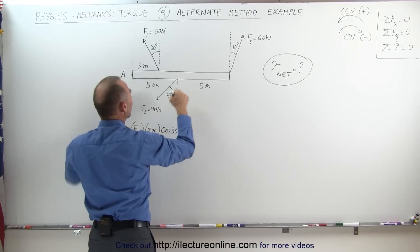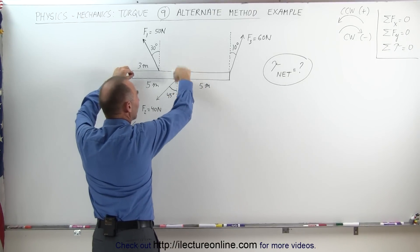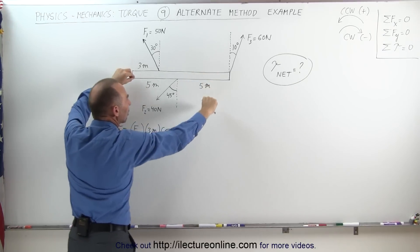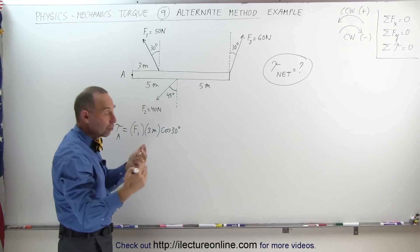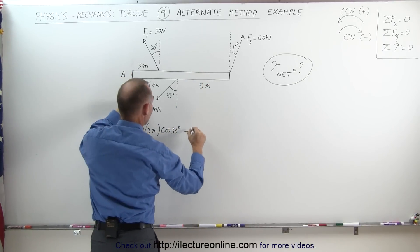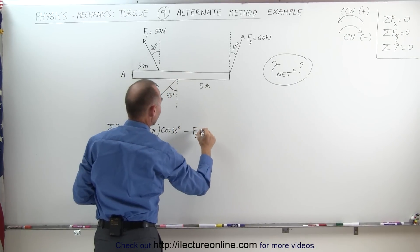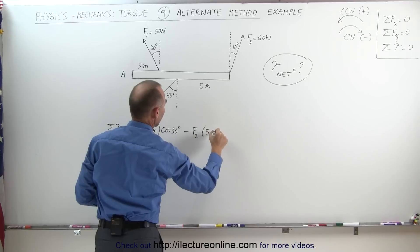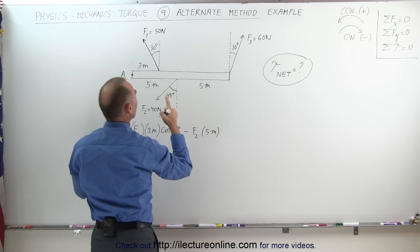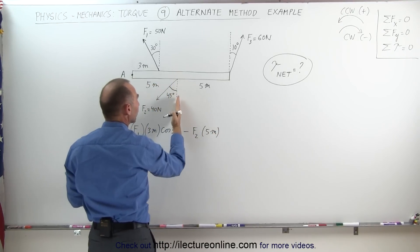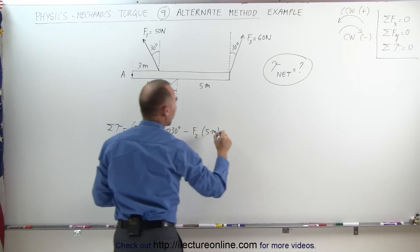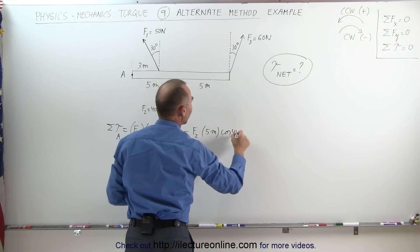The second force, F2, is acting such that the vertical component would give this a clockwise motion. That means it's a minus torque. So minus F2 times the distance from where the force is acting to the pivot point, which is 5 meters, times the cosine of the angle between the vertical and the direction of the force: cosine of 45 degrees.